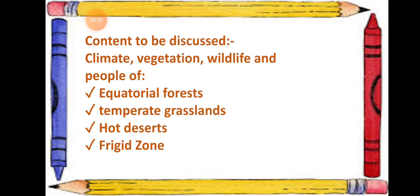The topics which will be discussed in this chapter are climate, vegetation, wildlife, and people of the equatorial forest, temperate grasslands, hot deserts, and the frigid zone.